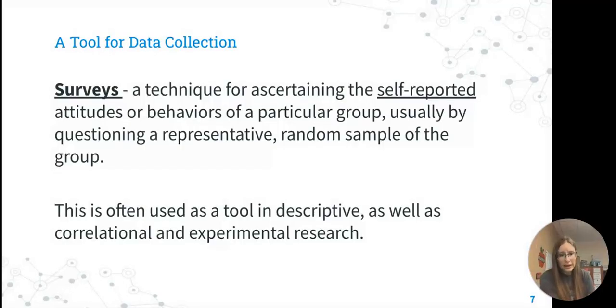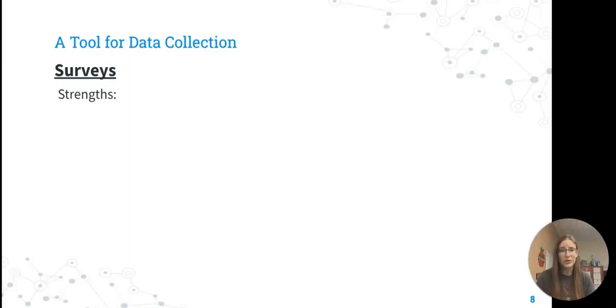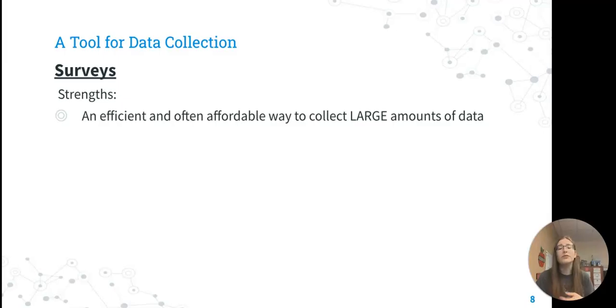In order to collect data, people often use a survey. This is a method where we collect self-reported attitudes and behaviors from hopefully a representative and random sample of a population. This is a tool used in descriptive research, correlational research, and even in experimental research. Surveys are not necessarily their own research method, but they are used in research a lot. There are some big strengths to a survey. They are very efficient and often super affordable to collect a large amount of data.